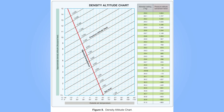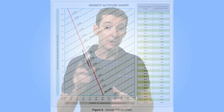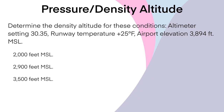The steps in the FAA typically start with converting the airport elevation to pressure altitude using the right side of the figure, then taking that pressure altitude and modifying it using the temperature on the left side. We can do all of this with the CX-3. The first question: determine the density altitude for these conditions — altimeter 30.35, temperature 25°F, airport elevation 3,894 feet MSL.